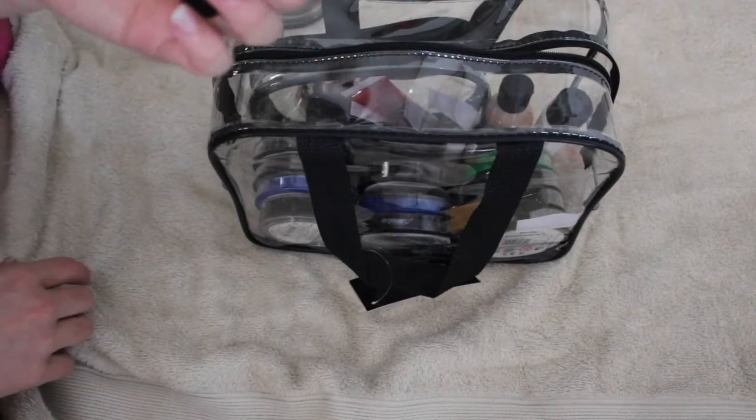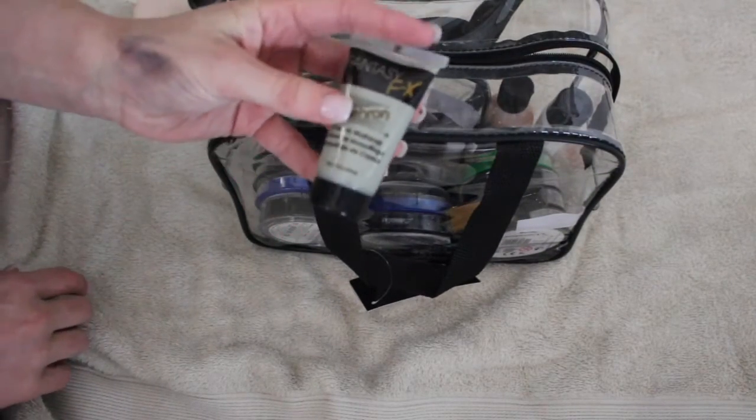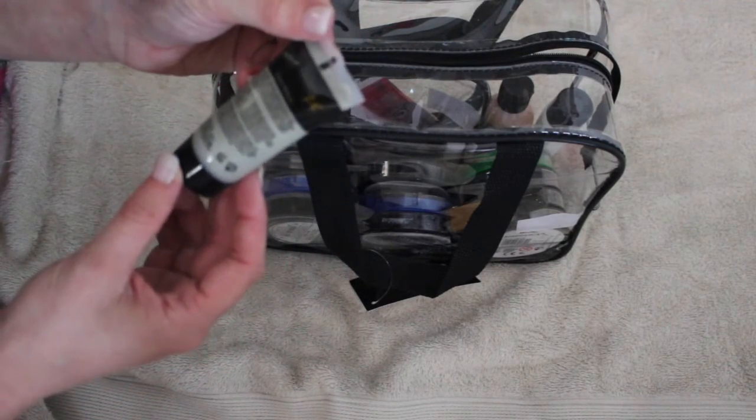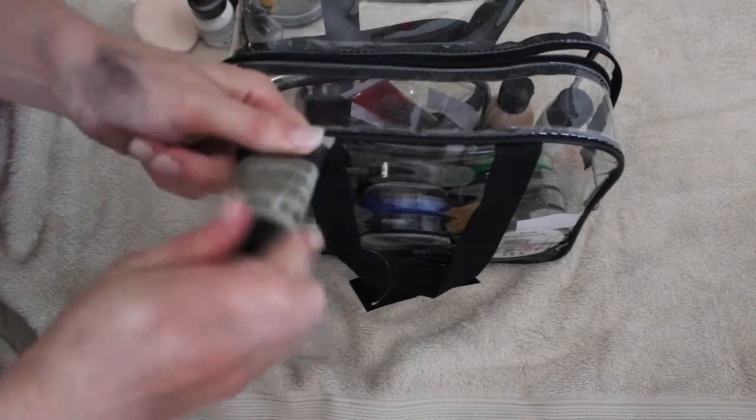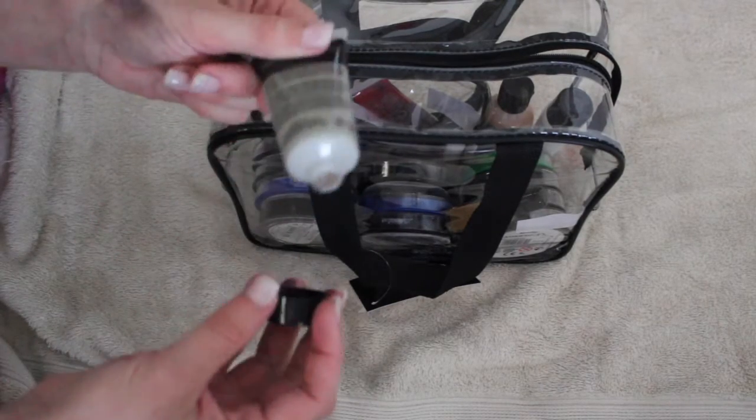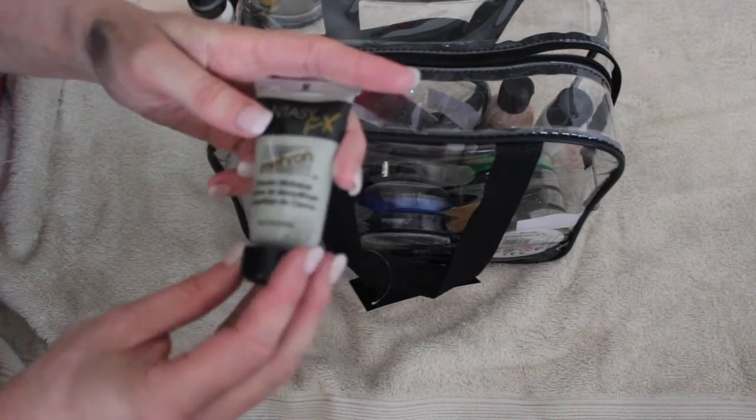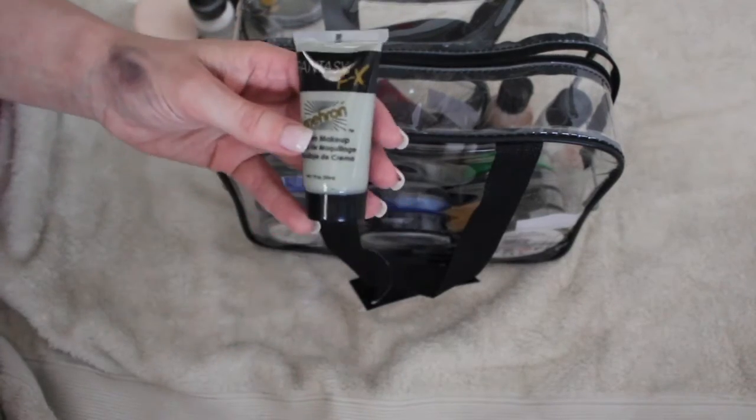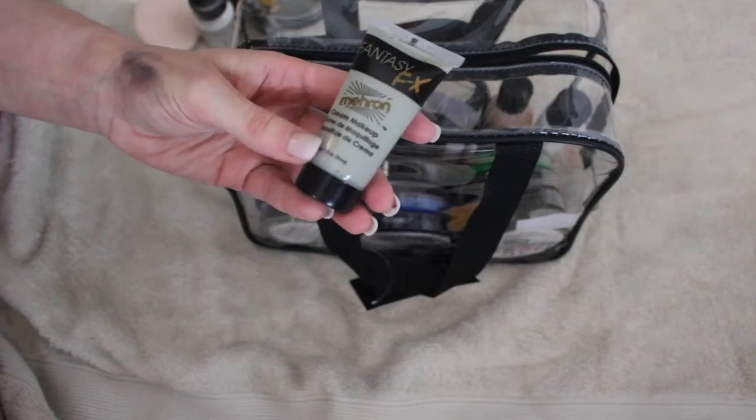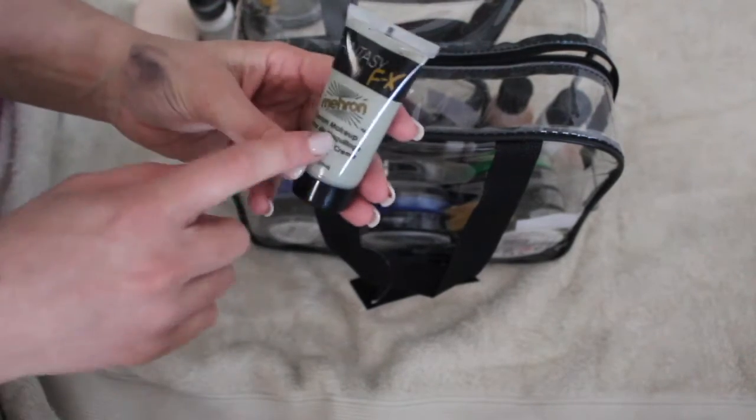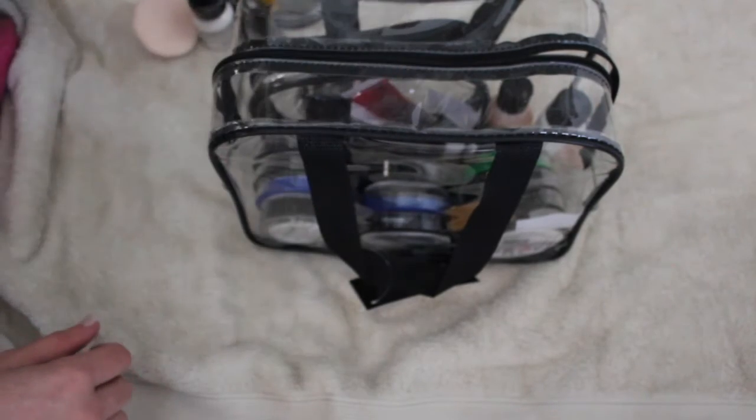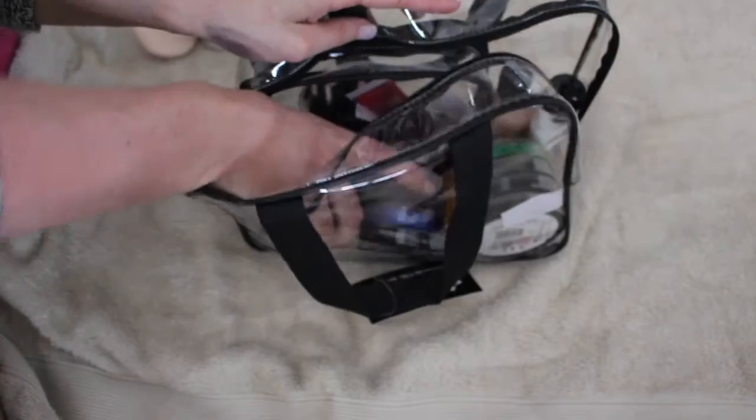Then I've got another Mehron cream makeup. This is the zombie color, I think it's just called. I don't know if it's even got a name on it. This I think is probably sealed, yeah. I haven't used this yet because it came in a kit. I really wanted the flesh gel, which I'll show you in a minute. The only way I could get it was to buy a whole Mehron kit, which is what I did. This was one of the things that came with it, just a zombie color skin cream.